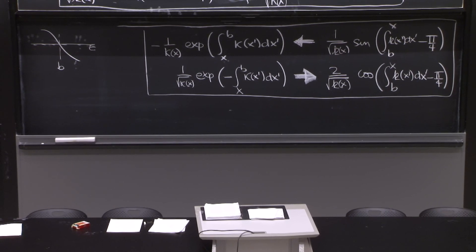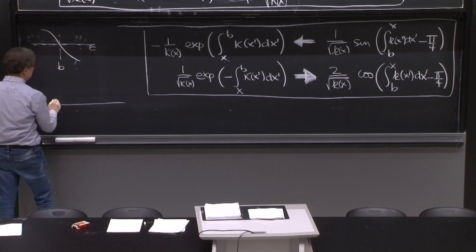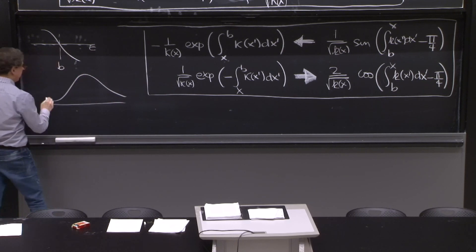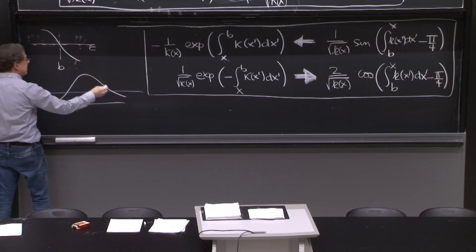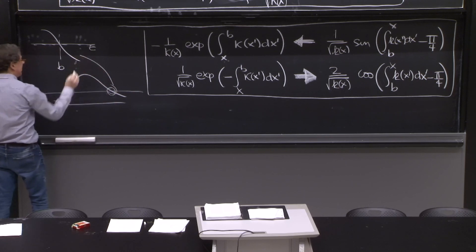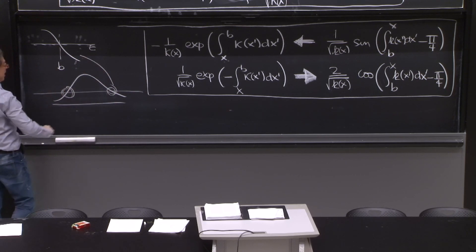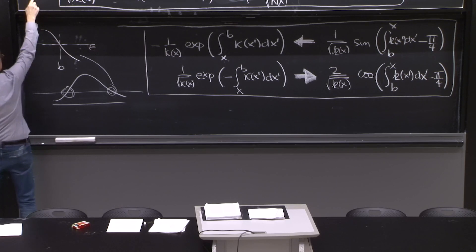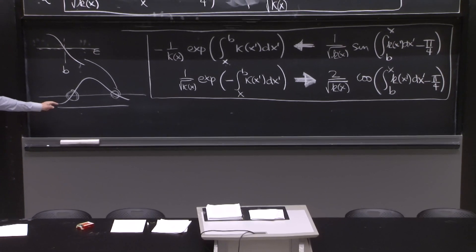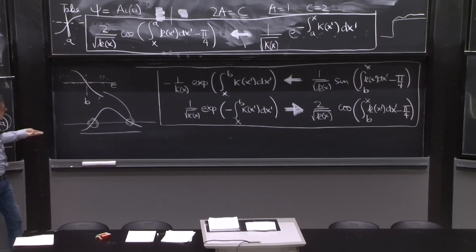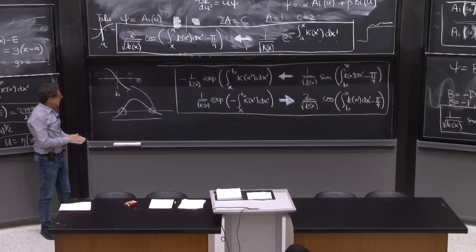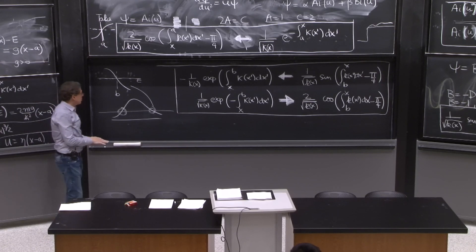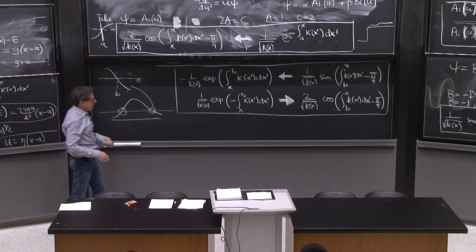One example we will not get to discuss now, but will be in the notes, is tunneling across a barrier. You will use the connection conditions for both turning point configurations. You need both sets of connection conditions for tunneling — it's a very nice exercise. I recommend that you play with it, and we'll put it in the notes as well. So let's stop here.